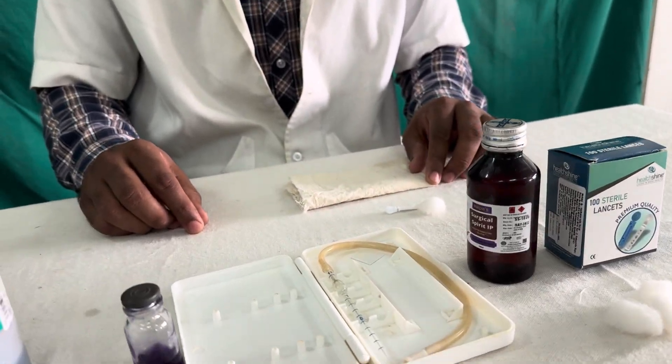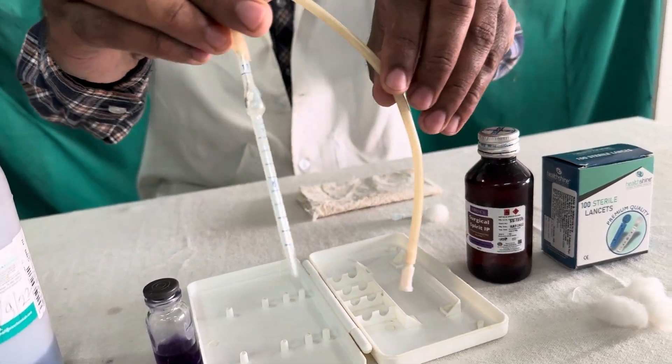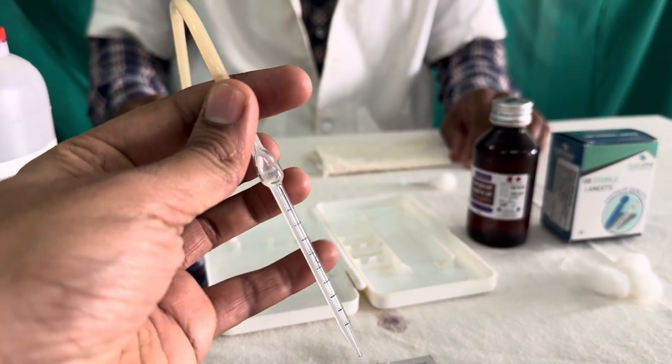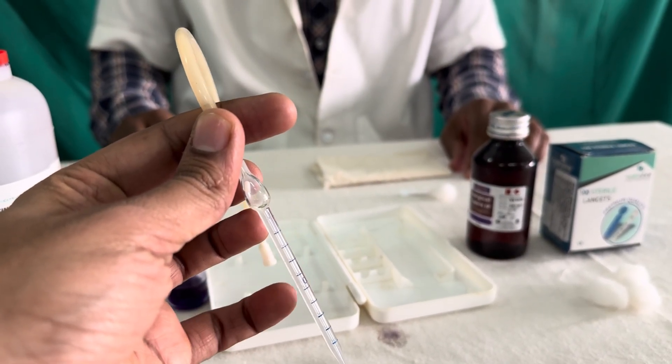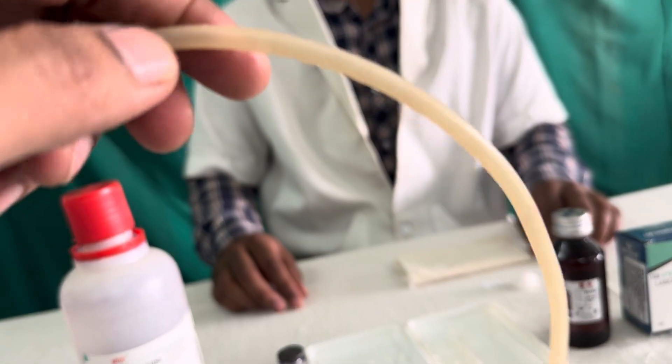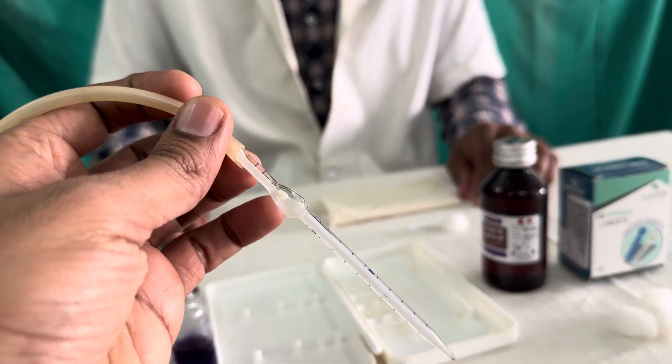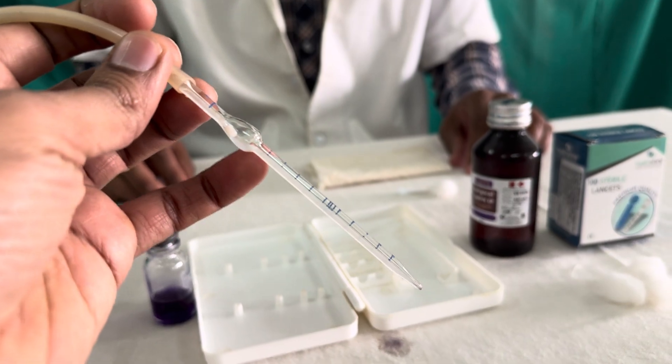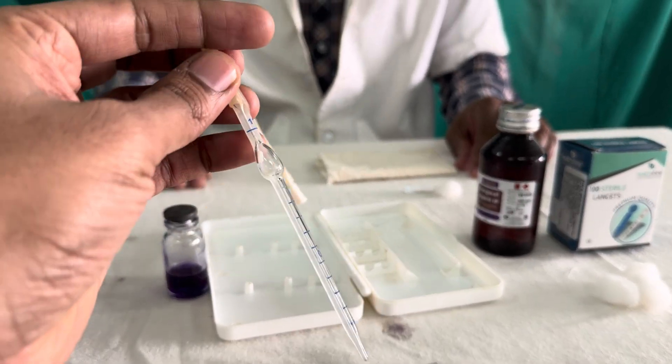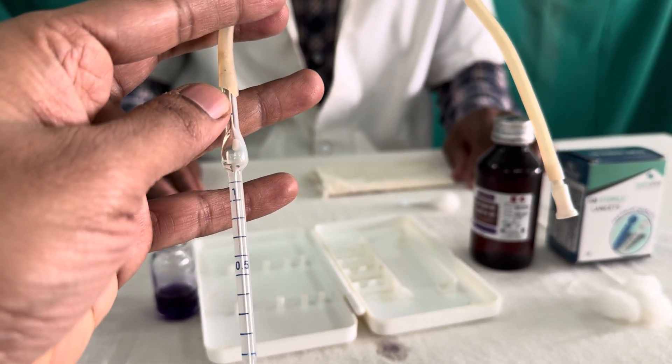Now again we have a WBC pipette. We have seen already an RBC pipette and this is a WBC pipette. What are the parts of the WBC pipette? This is the glass part, this is known as stem, this is the bulb, this is the rubber tube and this is the mouthpiece. Now in this bulb, you can see there is a white color bead and there are graduations or markings. The markings here are 0.5, this is the 0.5, then 1 and 11.